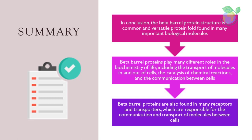In conclusion, the beta-barrel protein structure is a common and versatile protein fold found in many important biological molecules. It is characterized by its cylindrical shape and the presence of beta strands that form a closed barrel-like structure. Beta-barrel proteins play many different roles in the biochemistry of life, including the transport of molecules in and out of cells, the catalysis of chemical reactions, and the communication between cells. As we continue to study and understand the structure and function of beta-barrel proteins, we are likely to uncover many more important roles and applications for this important protein fold.